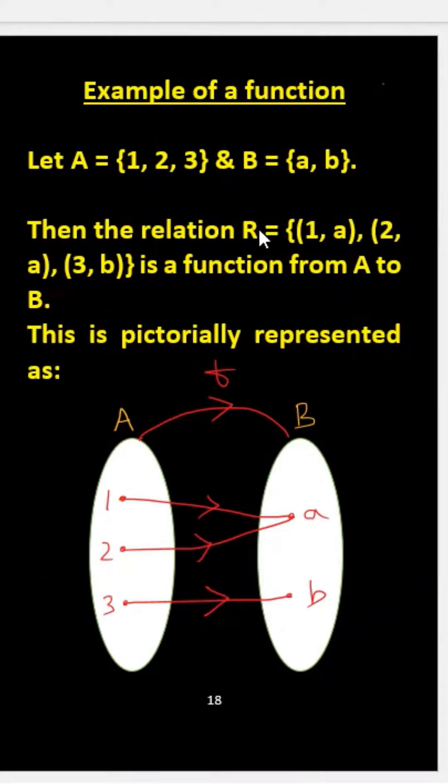Then the relation R = {(1, a), (2, a), (3, b)} is a function from A to B.